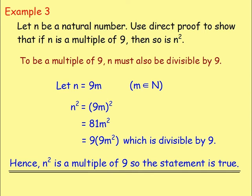For this example: let n be a natural number. Use direct proof to show that if n is a multiple of 9, then so is n squared. To be a multiple of 9, n must be divisible by 9, so let n = 9m for some natural number m. Therefore n² = (9m)² = 81m². Taking out 9 as a factor gives 9(9m²). Since we have 9 times something, that's divisible by 9 — it's in the 9 times table. Hence n squared is a multiple of 9, so the statement is true.